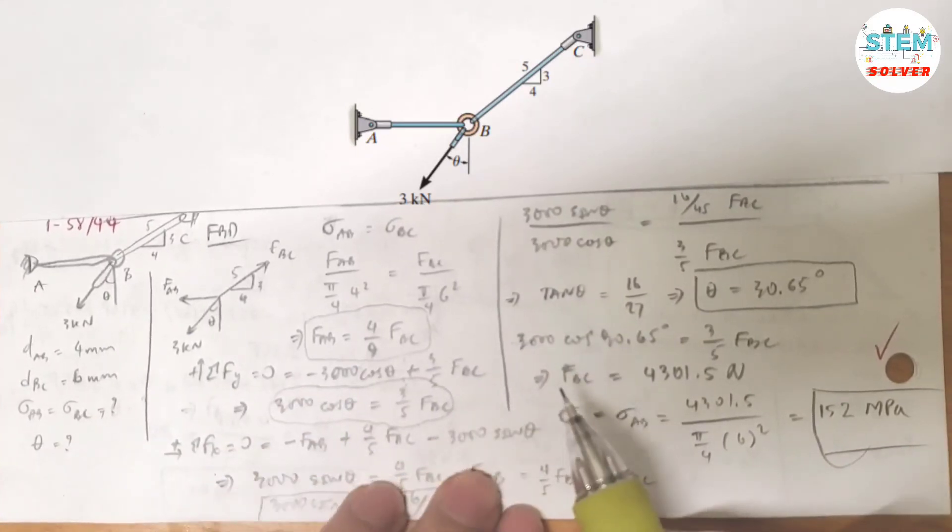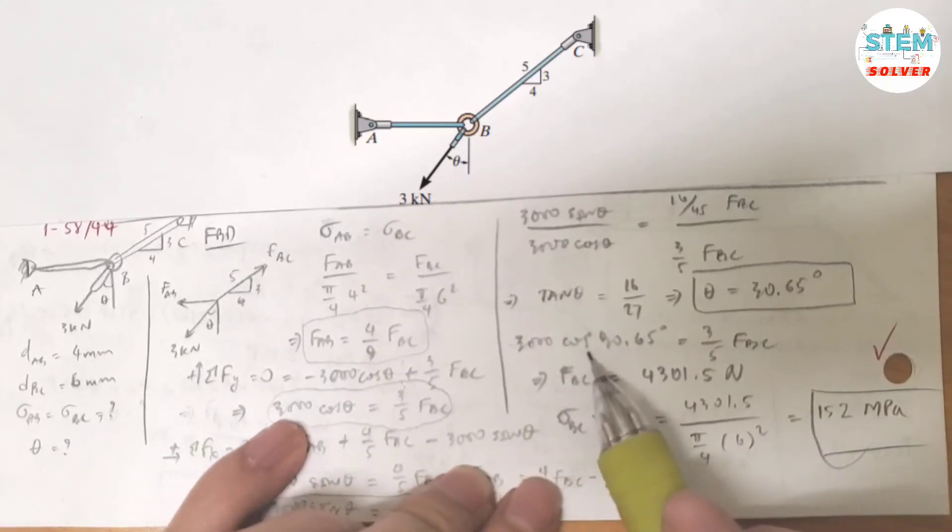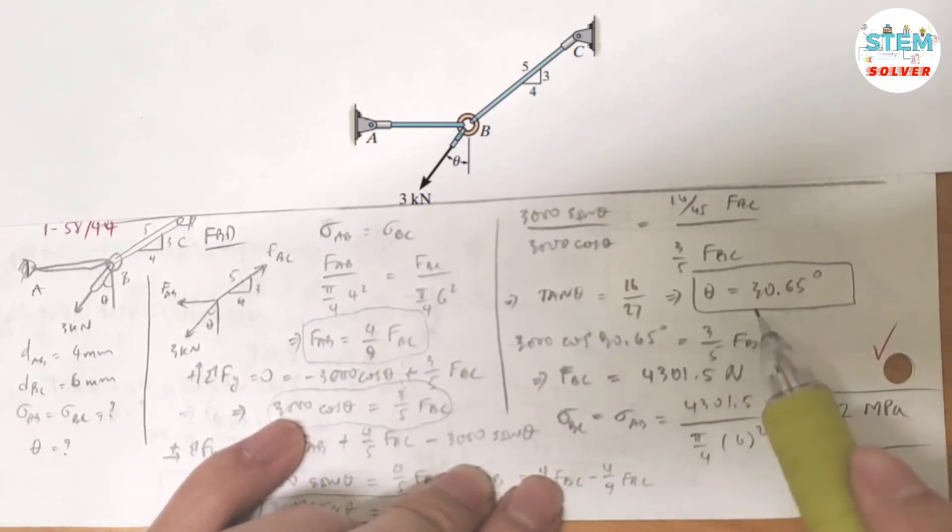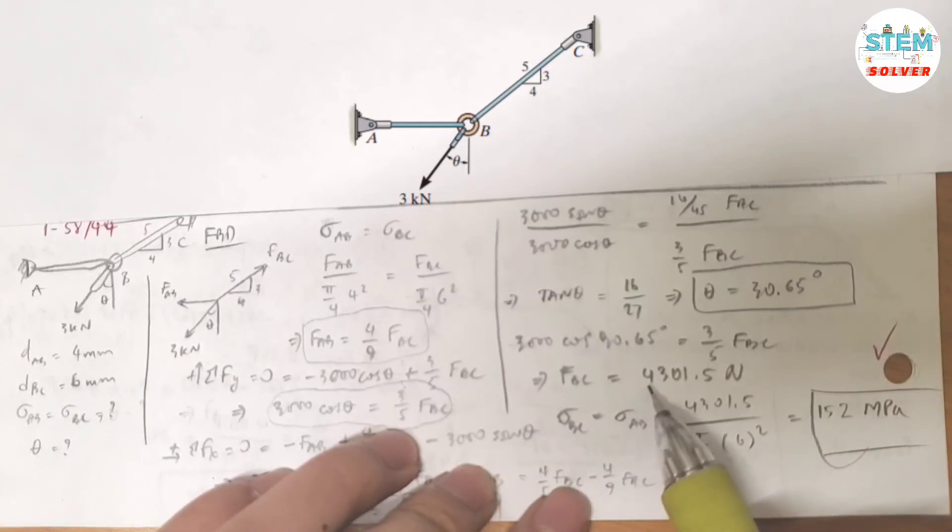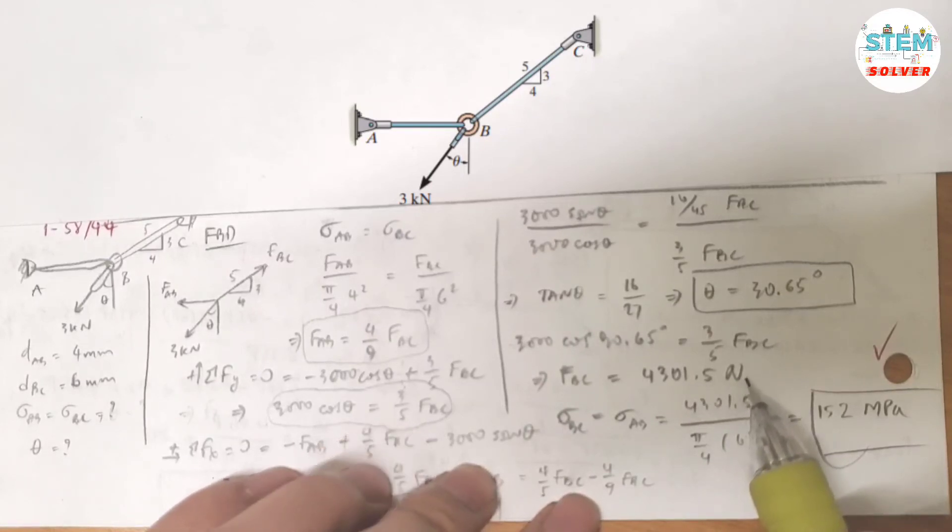So I have 3000 cosine theta, and theta is 30.65 degrees, equals 3/5 FBC. So I found FBC equals, I figured out FBC is 4314.5 newtons.